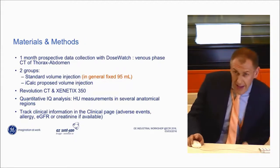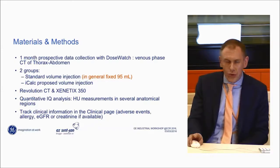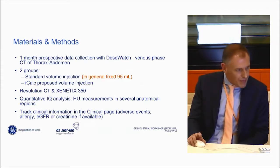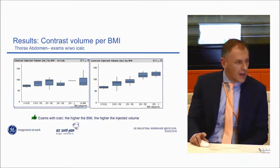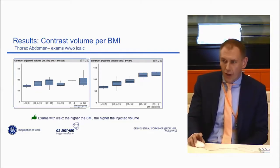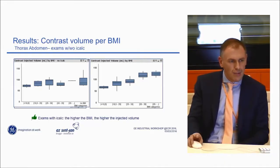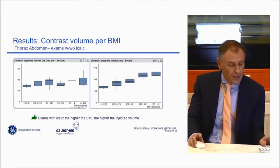We tested iCalc on our Nemoto and compared it to our house rule, with two groups of patients — a house rule group and an iCalc proposed volume group — all scanned on the same scanner using the same contrast. We did some, but admittedly not enough, quantitative image quality analysis up to now. Looking at the patient population with low, normal, slightly higher, and very high BMI, the volumes injected by iCalc show a more logical spread compared to the house rule group: they increase with BMI, which is what one would expect — and this is definitely not the case for our house rule group.